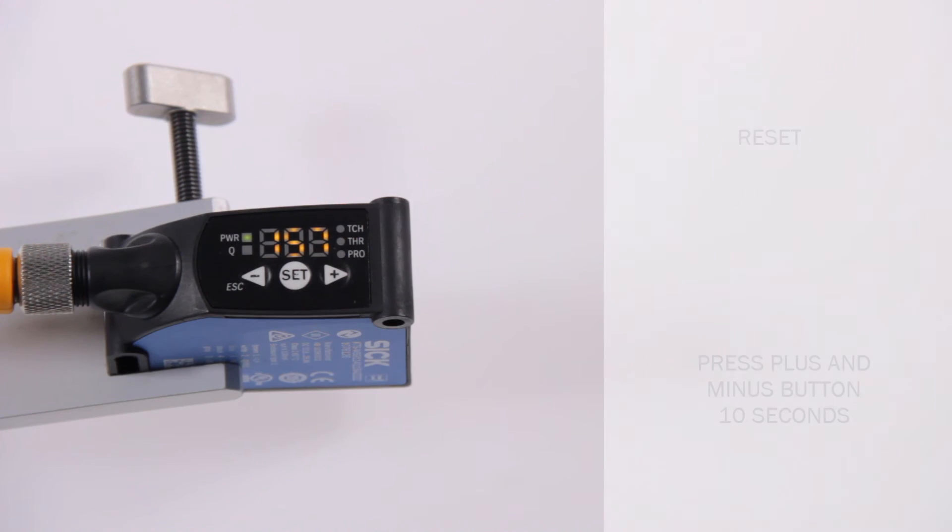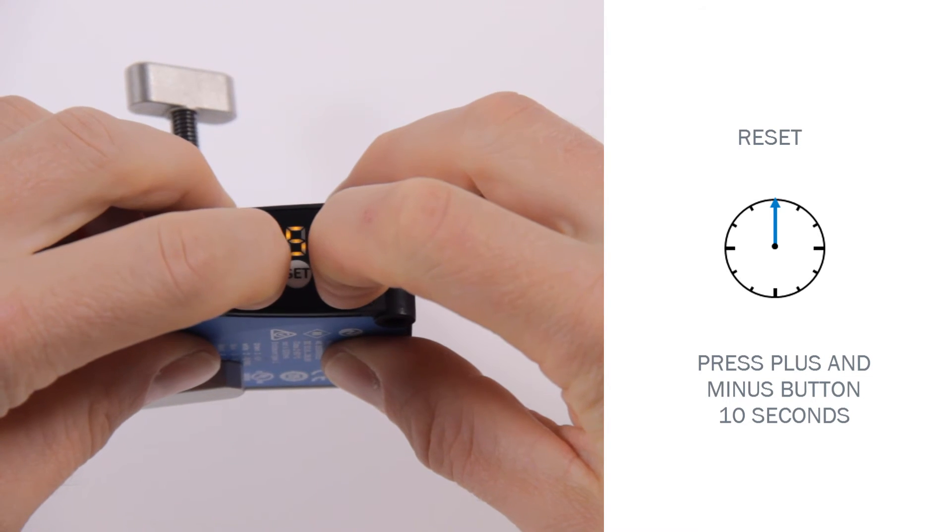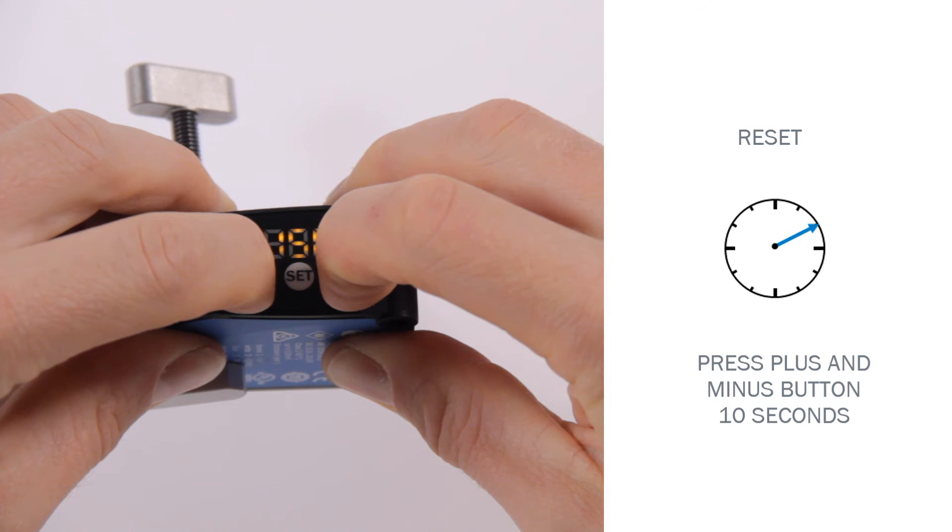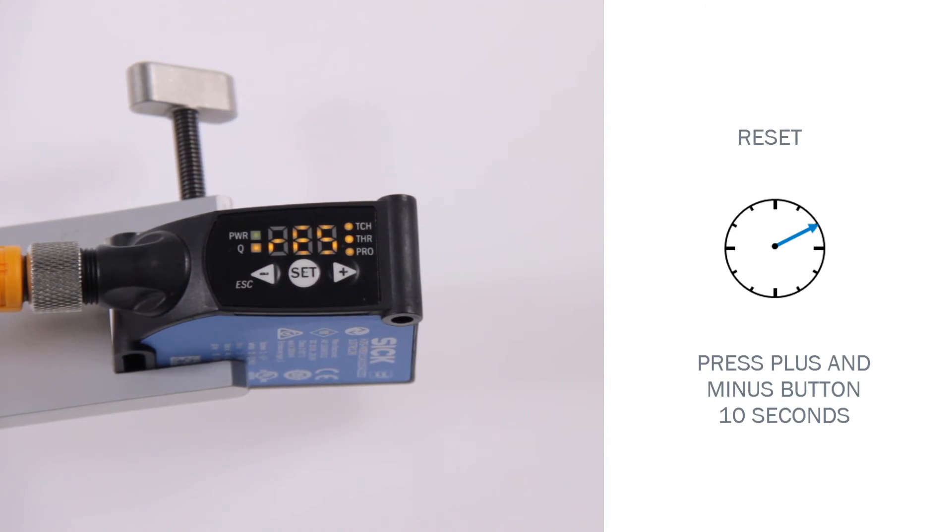Reset. To reset the sensor to default settings, press both plus and minus button at the same time for longer than 10 seconds. Res for reset is displayed and the settings are reset.